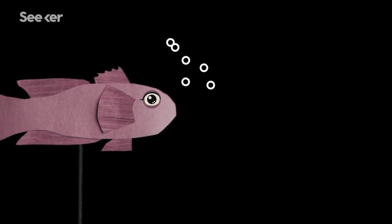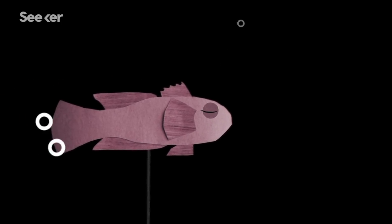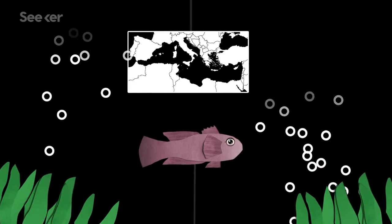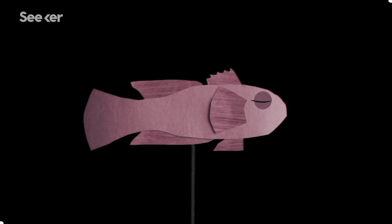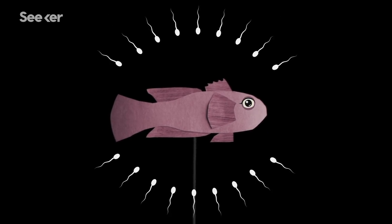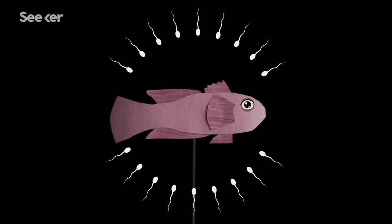Grass gobies are bottom-feeding fish endemic to coastal waters of the Mediterranean basin. These small fish have an external fertilization system, meaning that sperm isn't deposited inside the safe and secure space of a female's body.